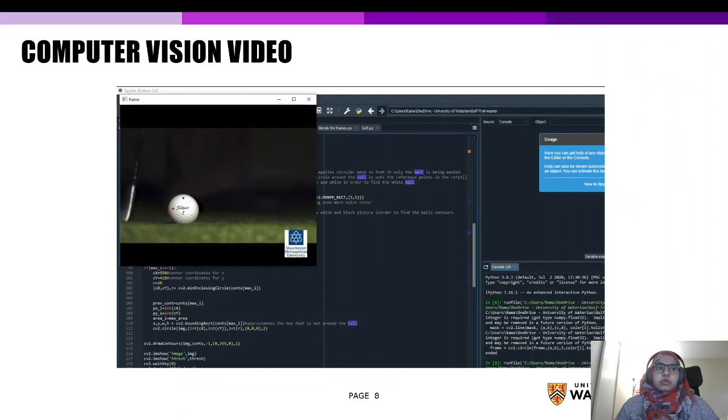I was also able to computer generate three circles in the ball and these circles will be used to determine the ball's initial conditions such as the velocity, spin rate, and launch angles.